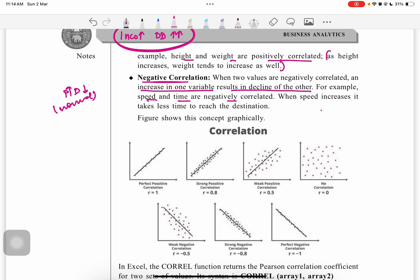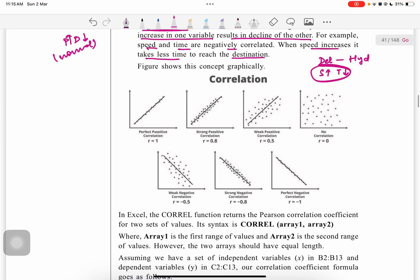Speed and time are negatively correlated. If we are going from Delhi to Hyderabad, if the speed increases, the time will decrease. There is negative correlation—when speed increases, it takes less time to reach the destination. Here is the scatter graph showing the correlation coefficients.